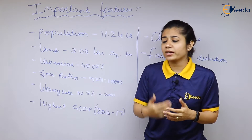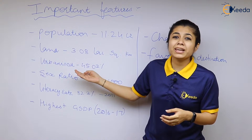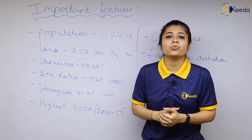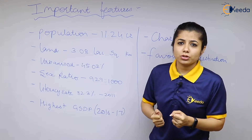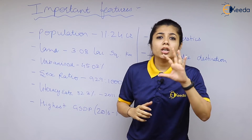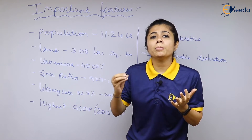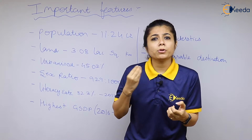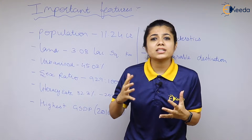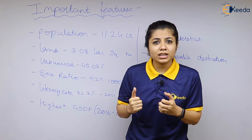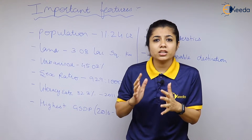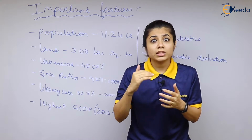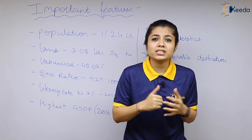Apart from that, the next factor to be considered is urbanization. Urbanization is 45.2% — Maharashtra is the most urbanized state of our country. Urbanization is the ratio of the number of people living in urban areas to the total population. Urban areas are classified as areas which are very well developed and have a population of more than 5,000. In Maharashtra, a major portion of the population is living in urban areas.